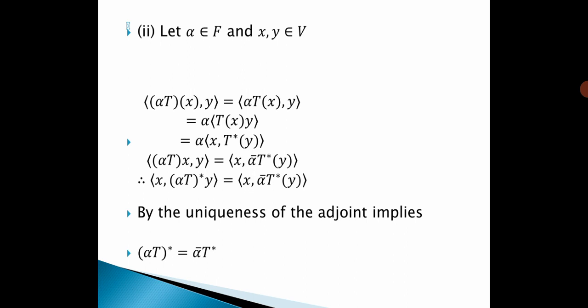Second property: Let alpha belong to F and x, y belong to V. The inner product of (αT)(x), y equals the inner product of αT(x), y, which equals alpha times the inner product of T(x), y, which equals alpha times the inner product of x, T*(y). Therefore, the inner product of (αT)(x), y equals the inner product of x, ᾱT*(y). By the uniqueness of the adjoint, (αT)* = ᾱT*.